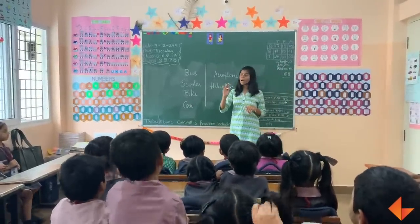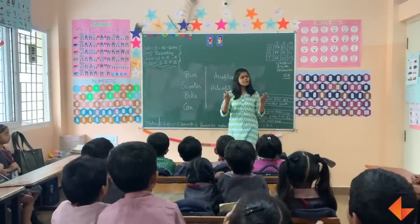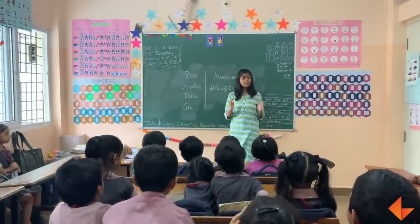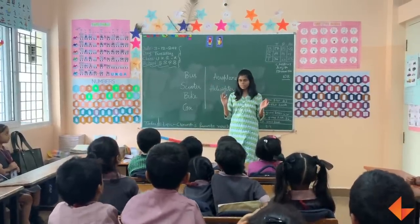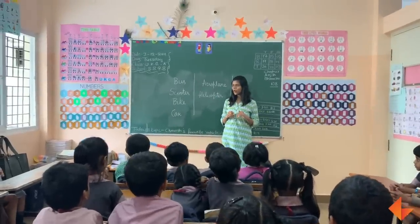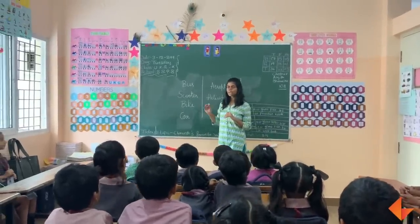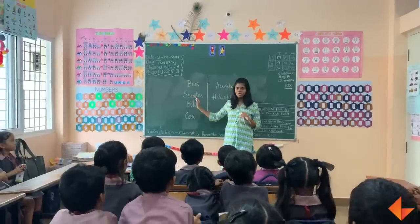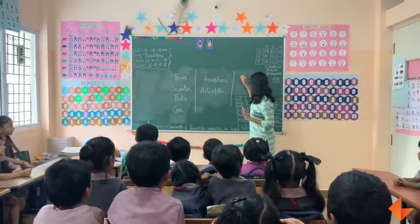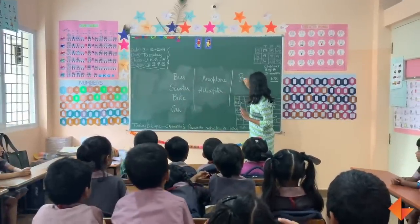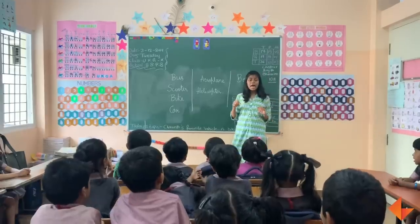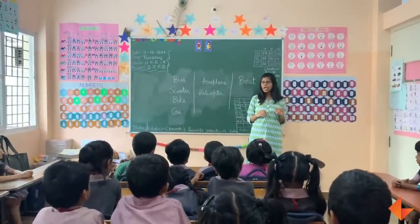Bike — I have written bike here. I will tell you a vehicle and you tell me how it travels. Boat. Where does a boat travel? Not on the road. Very good. Boat travels in the water.